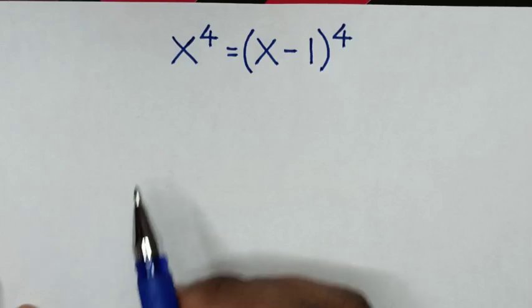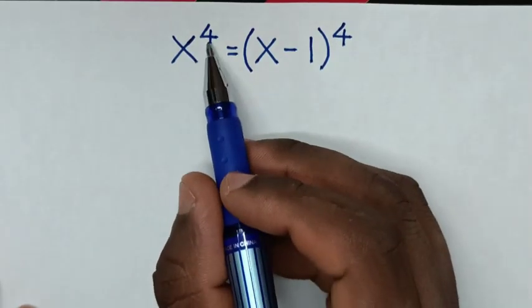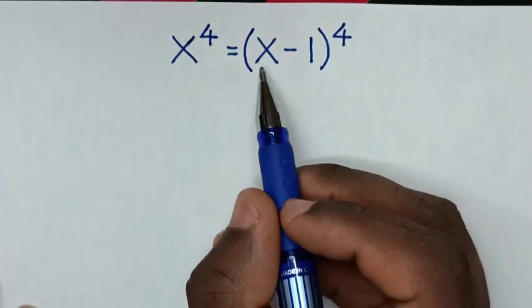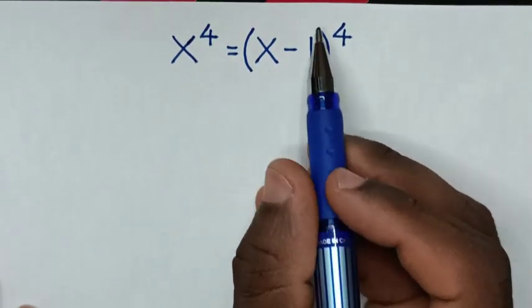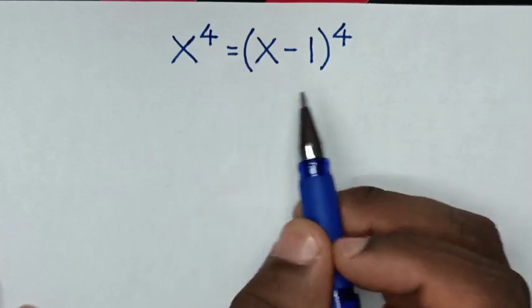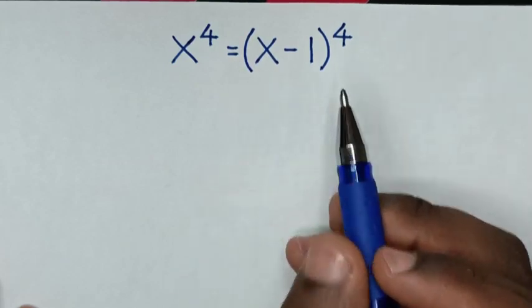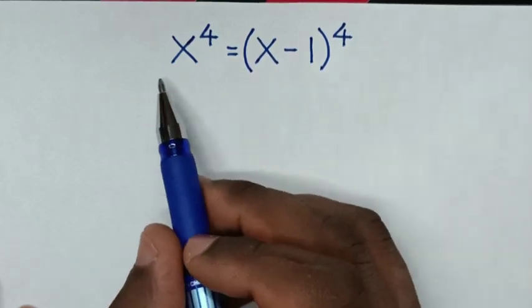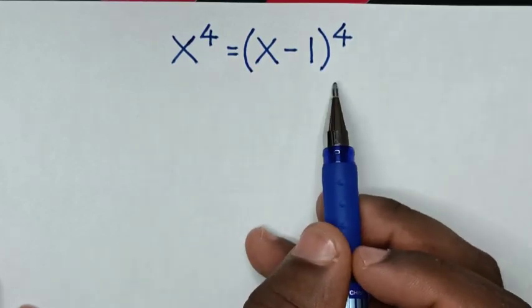Hello! We have x to the power of 4 is equal to (x minus 1) to the power of 4. We need to find the values of x from this equation.